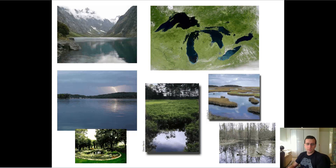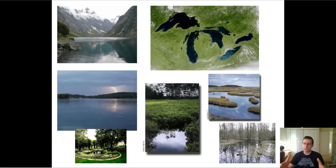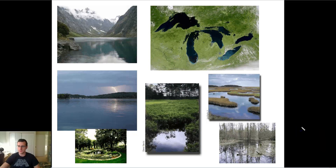You have lakes, and you also have bogs — basically covered with vegetation, so if you're not careful you won't even realize the standing water is there. You also have marshes and swamps. They're a little less covered with vegetation. Swamps actually have more trees than marshes, while marshes have more grasses.